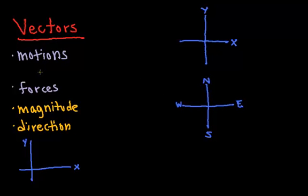Today I'll be talking about vectors, which are 2D geometric objects that have both a magnitude and a direction.